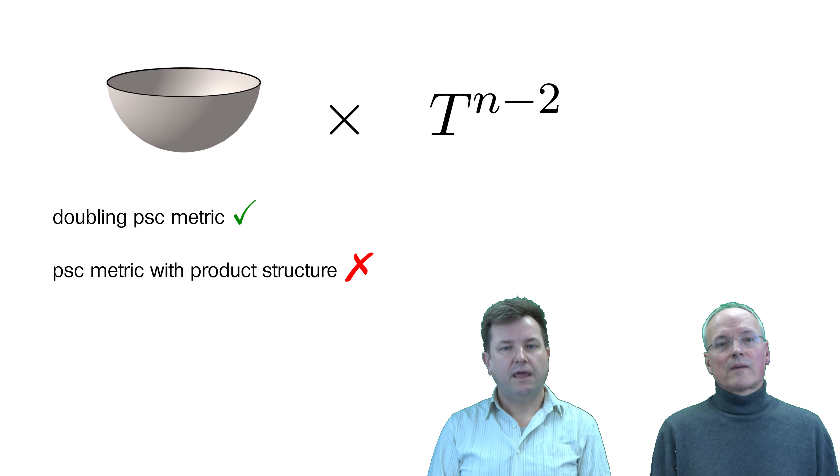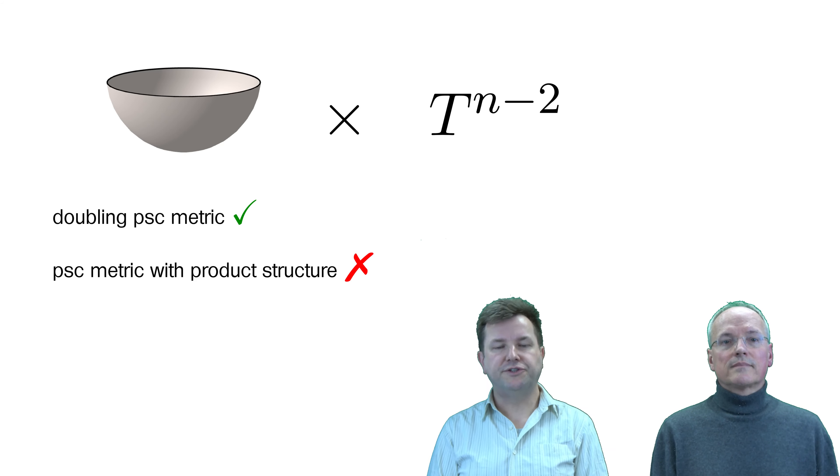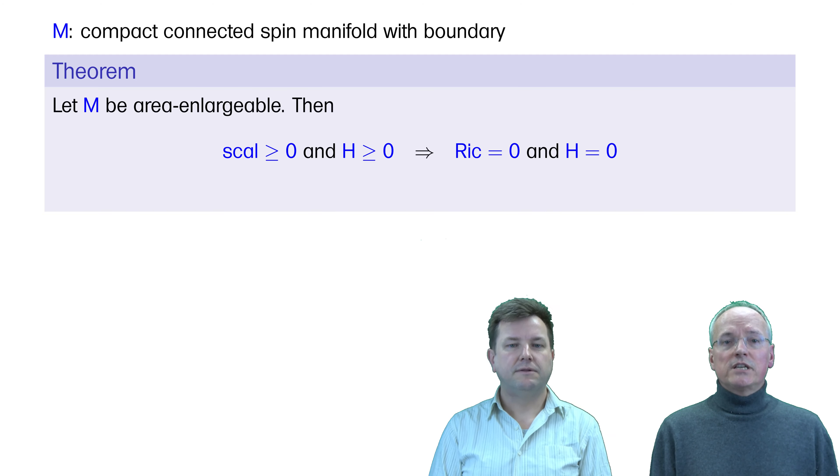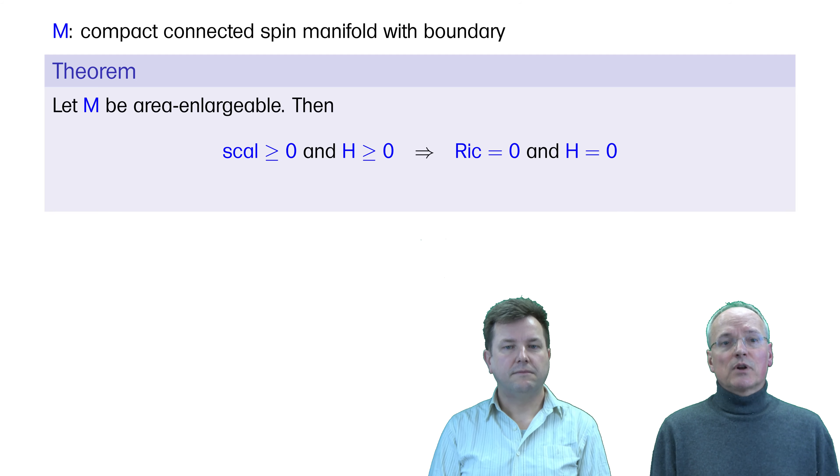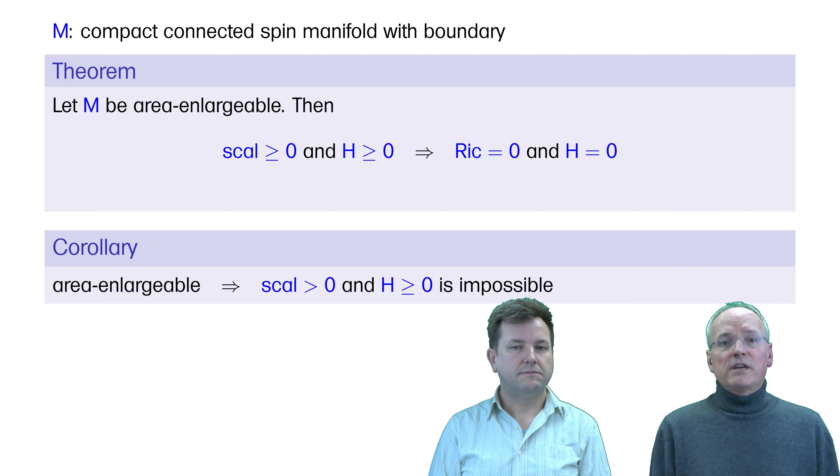This changes if in addition we demand that the boundary also has positive scalar curvature. Using the Atiyah-Patodi-Singer index theorem, we show that any metric on an area-enlargible compact manifold with non-negative scalar curvature and with a boundary of non-negative mean curvature must actually be Ricci flat and have minimal boundary. In particular, there are no PSC metrics with mean convex boundary on such manifolds.